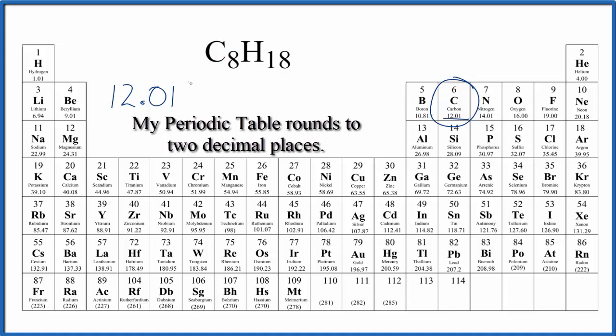So we have 12.01 grams per mole. We have eight carbon atoms, so we'll multiply that by eight, and I won't write grams per mole each time. Let's do that at the end.